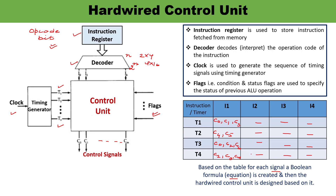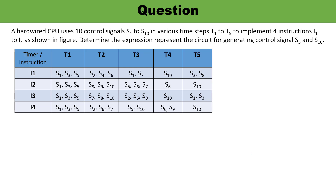From this table you need to evaluate the Boolean formula, and that Boolean formula is then implemented. Here is a numerical question — this question has also been asked in the GATE examination. A hardwired CPU uses 10 control signals S1 to S10 in various time steps T1 to T5 to implement four instructions I1 to I4, as shown in the diagram. You have to derive the expression representing the circuit for generating control signals S5 and S10.